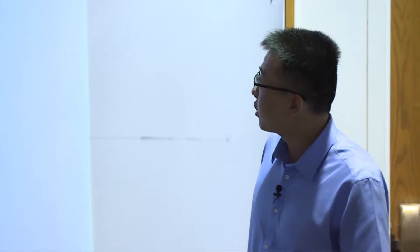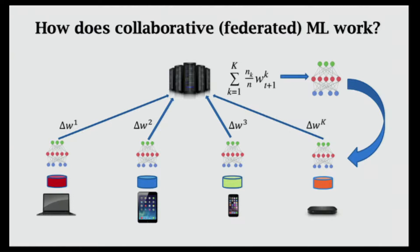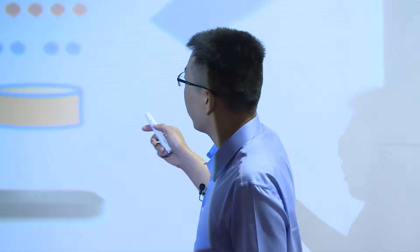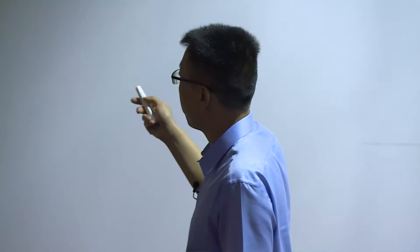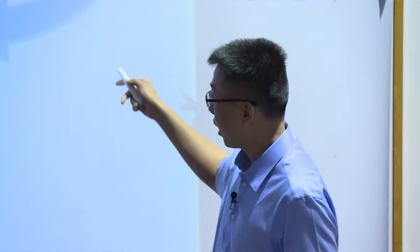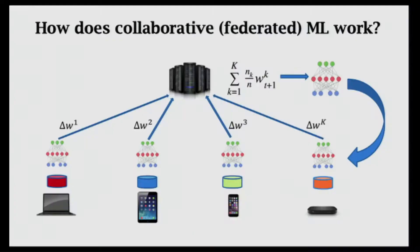Collaborative machine learning, also known as federal learning, works as follows. There's a central parameter server. In every iteration, the server sends the model parameters to all user devices. The user devices use the model parameters and their local data to compute ascending directions like a gradient. The server aggregates the ascending directions and uses them to update the model parameters, then sends the updated parameters back to the user devices. This continues until the server trains a model using all the data without actually accessing the data.